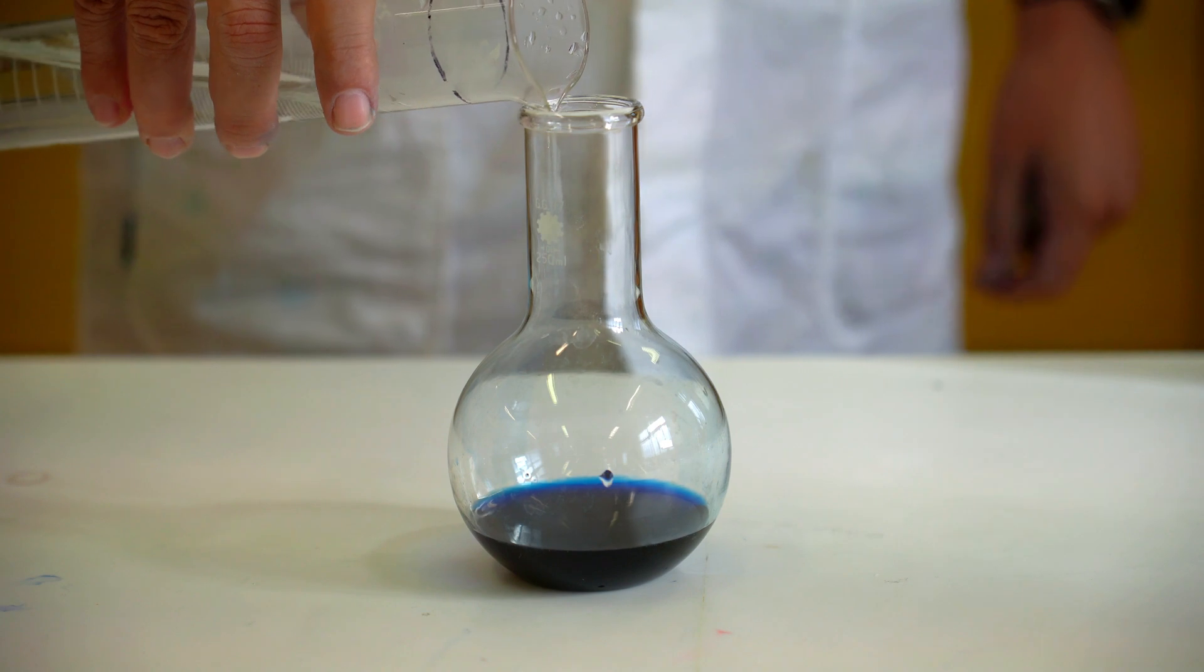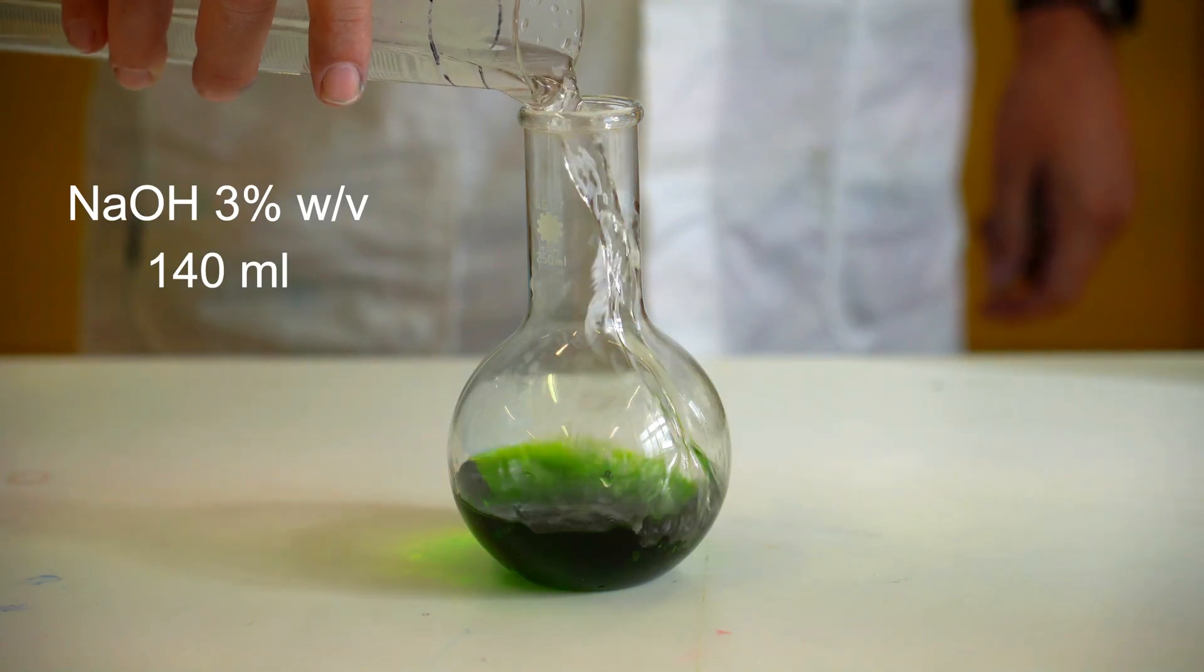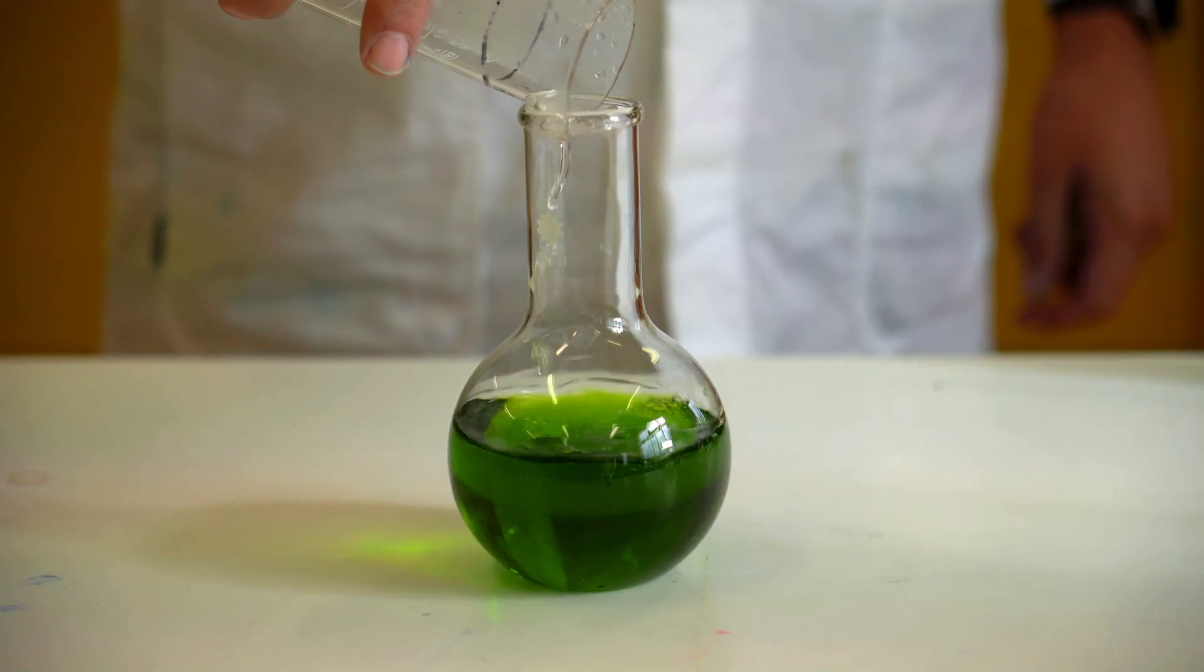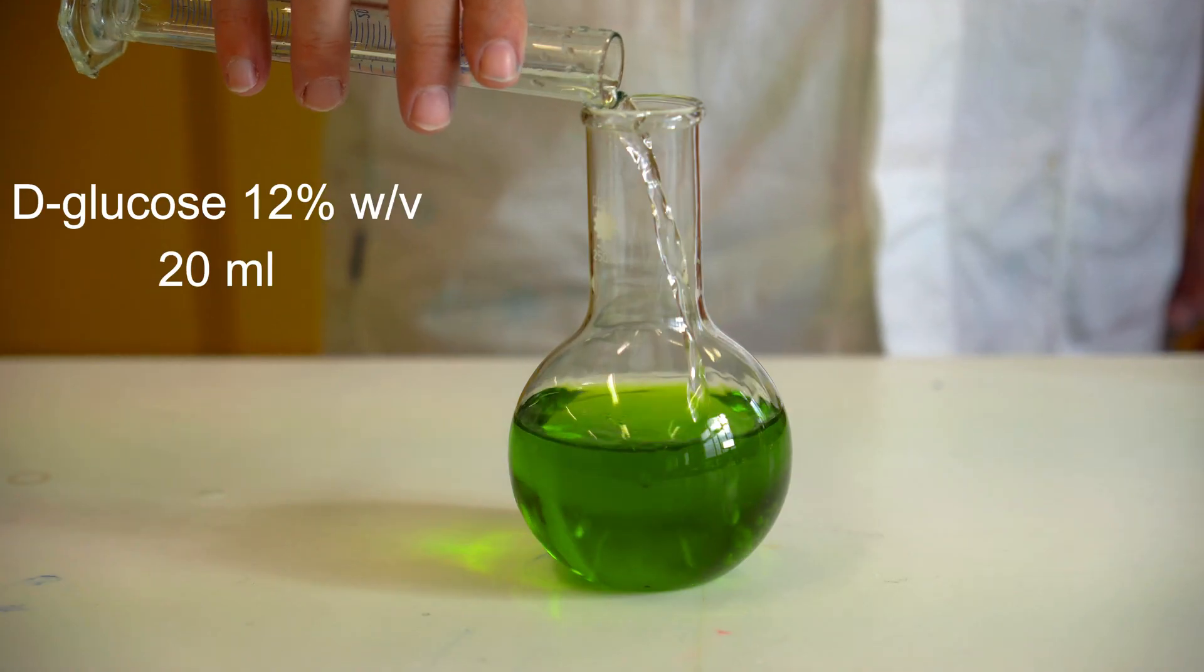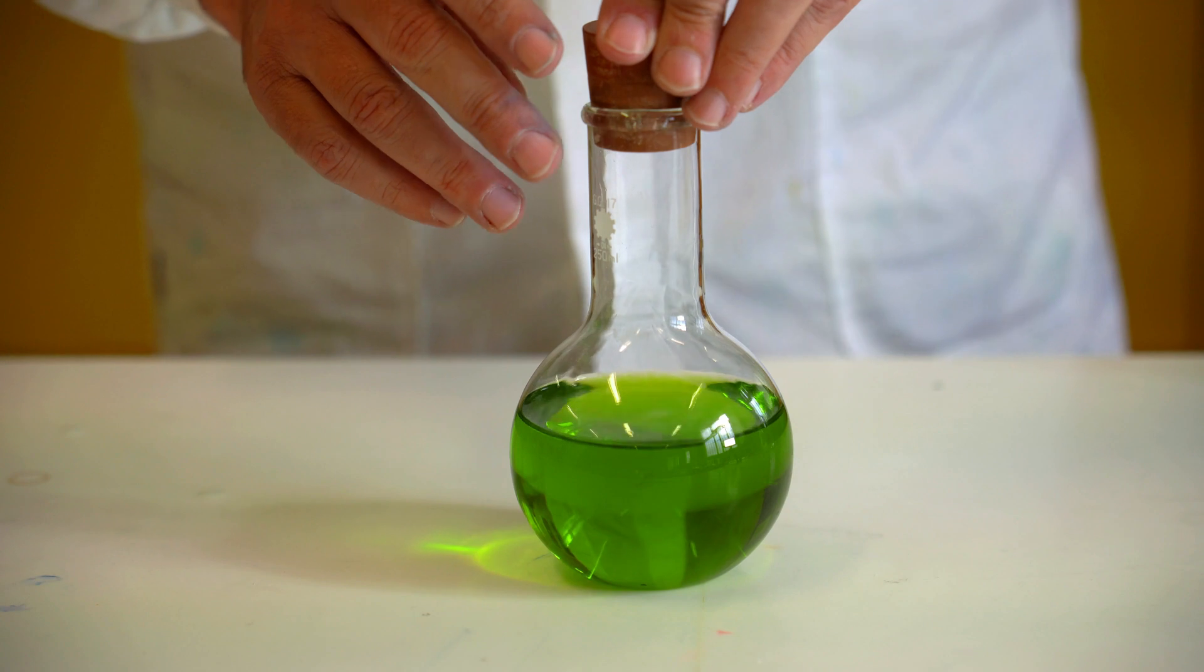40 ml of indigo carmine solution followed by 140 ml of sodium hydroxide. Indicator becomes green in such a high pH. Then, 20 ml of glucose solution are added.